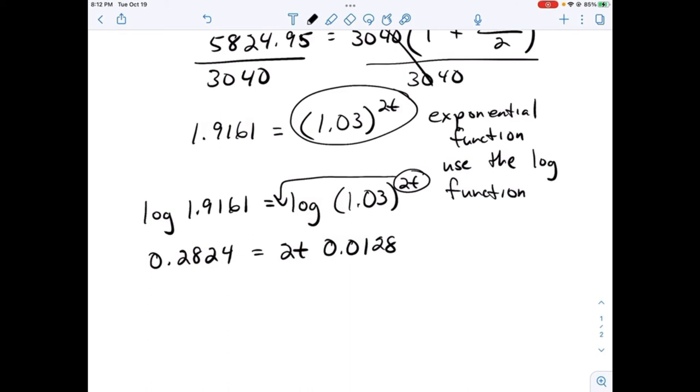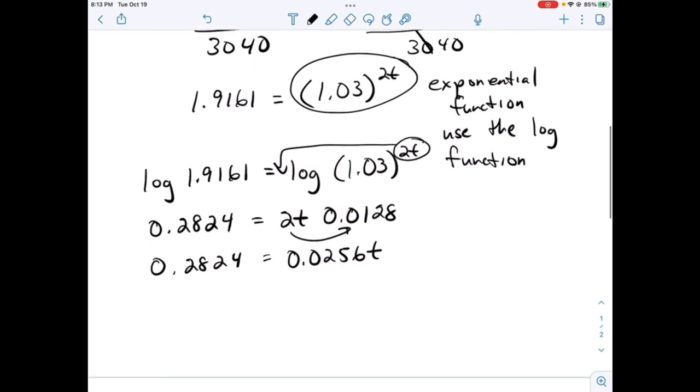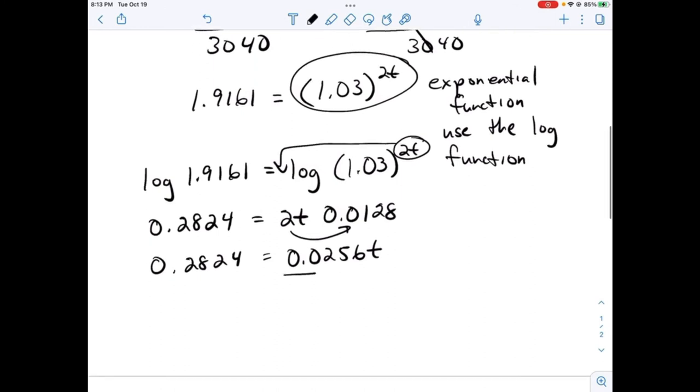Two times 0.0128 gives us 0.0256t. At this point, we simply divide both sides by 0.0256.